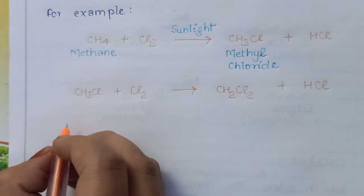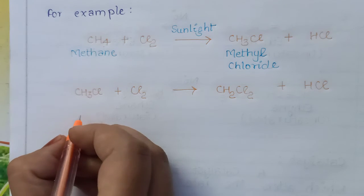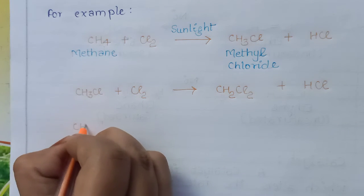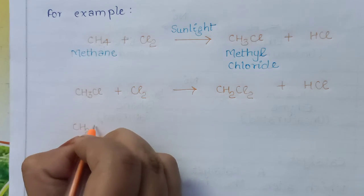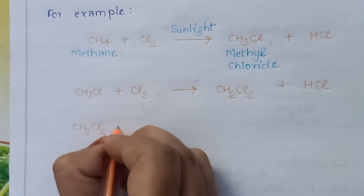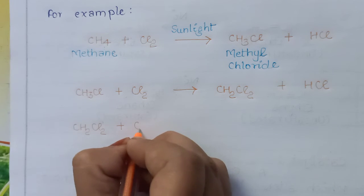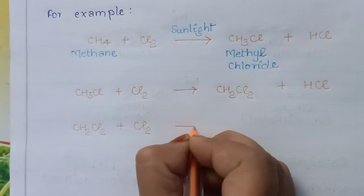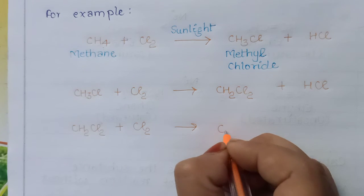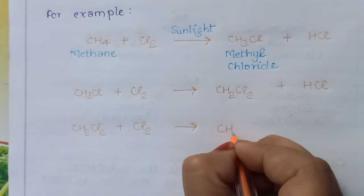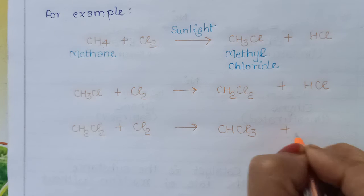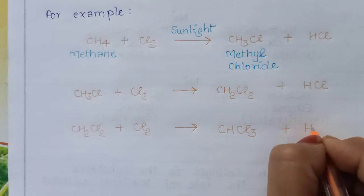In the next step, when CH2Cl2 reacts with Cl2 in the presence of sunlight, it forms CHCl3 and HCl.